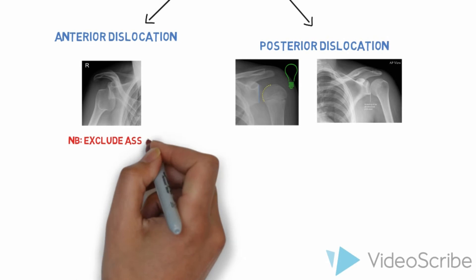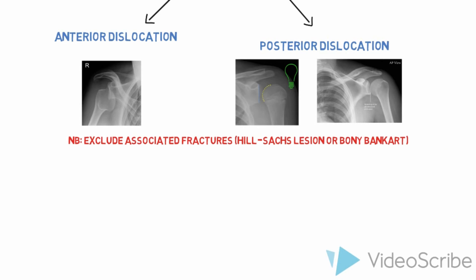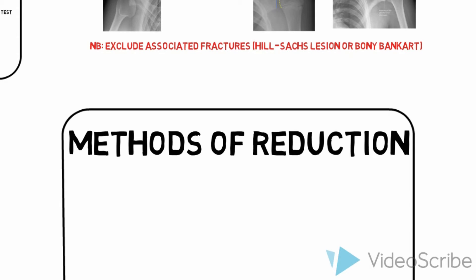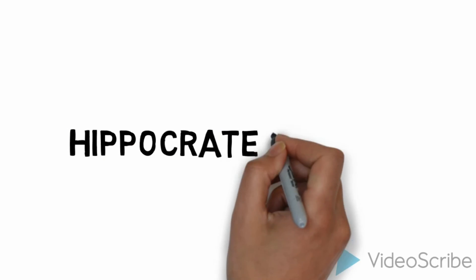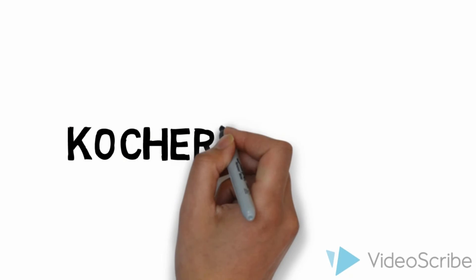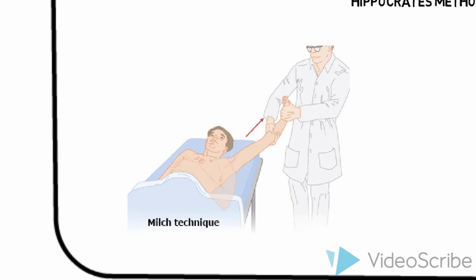It is also important to comment on the presence of associated fractures, such as the Hill-Sachs lesion — a posterolateral humeral head depression from an anterior dislocation — as well as a bony Bankart, which is the detachment of the anterior inferior labrum of the glenoid as a direct result of an anterior dislocation. We will now describe and demonstrate some of the methods of shoulder reduction, including the Hippocratic method both with and without an assistant, the Coaches method, and the Modified Milch. Document your patient's neurovascular status and clear any possible fractures before doing any of these maneuvers.